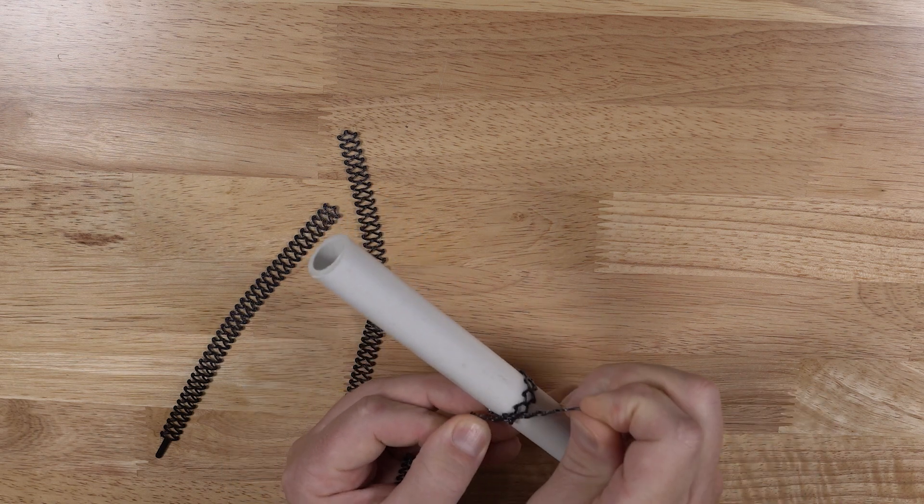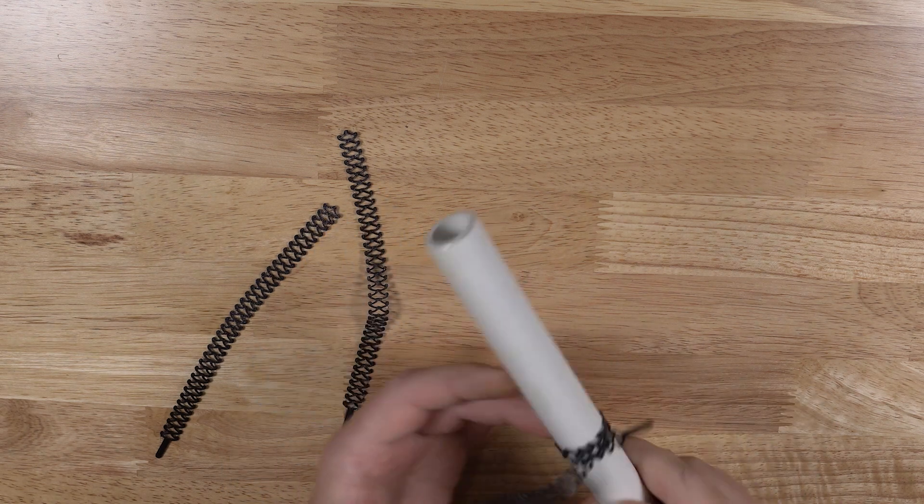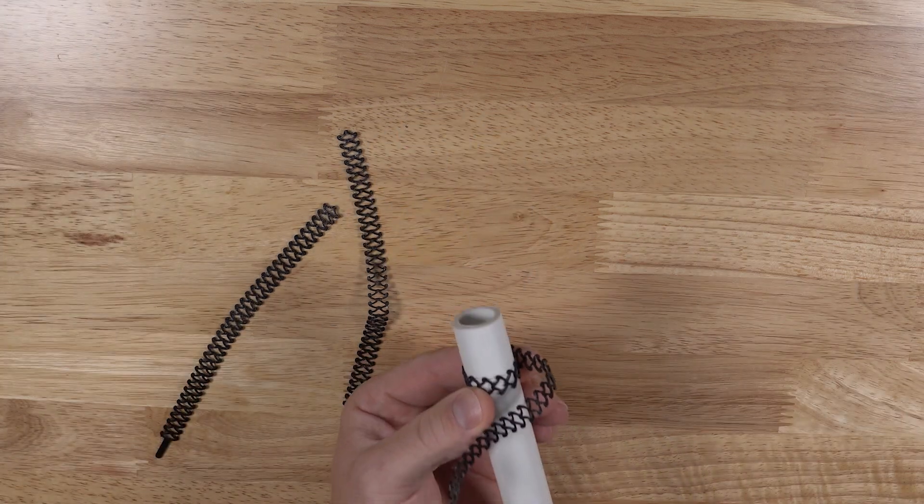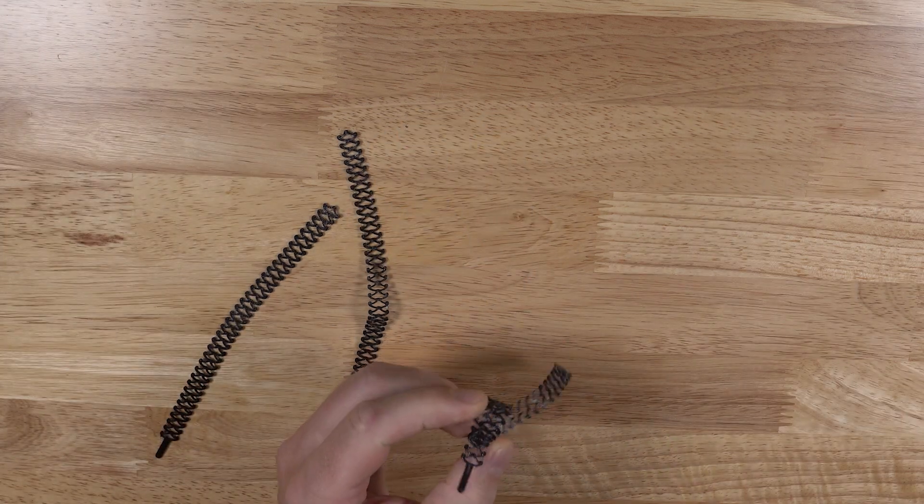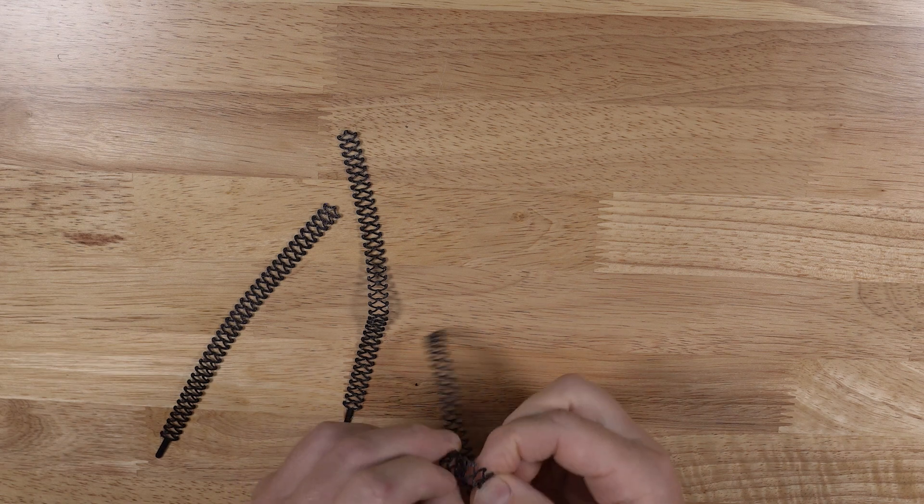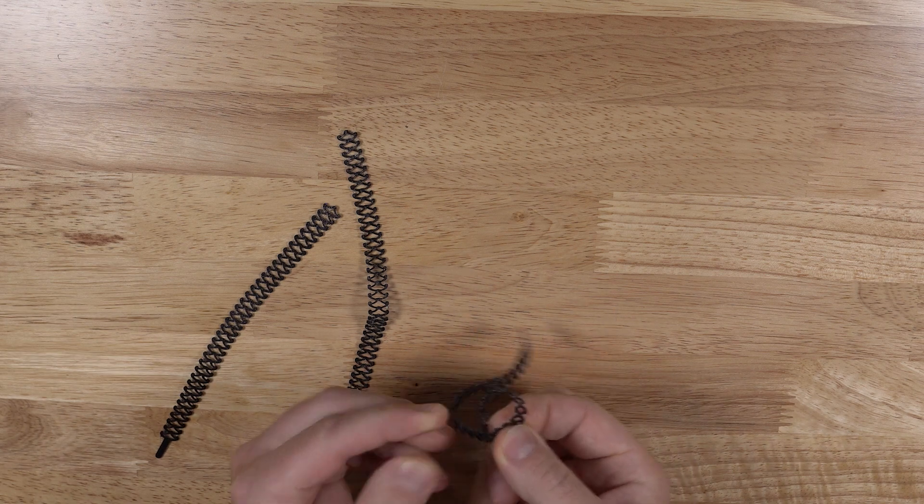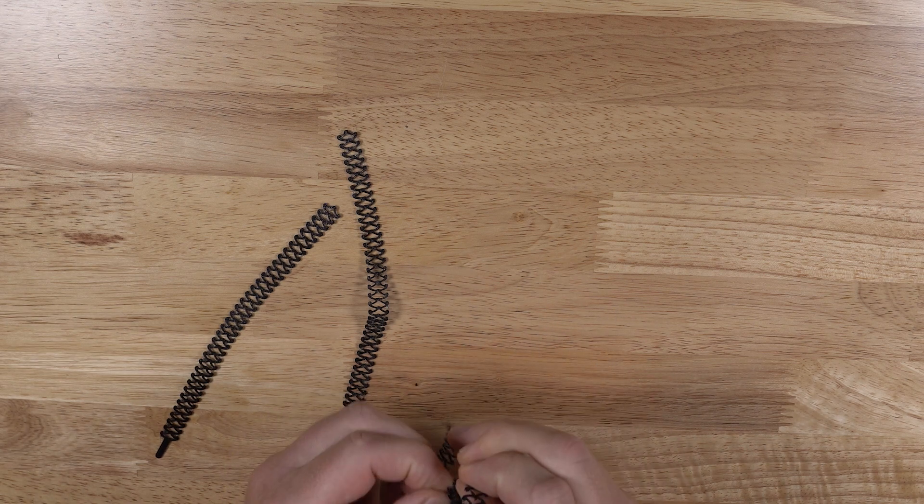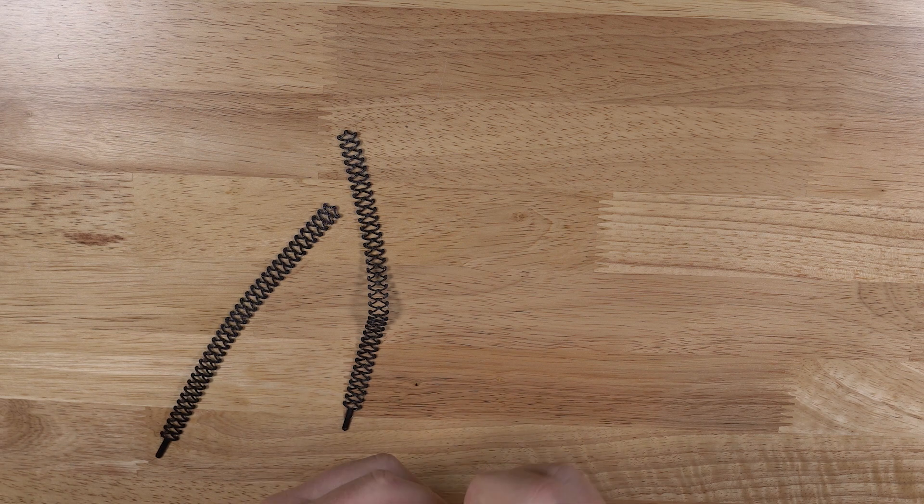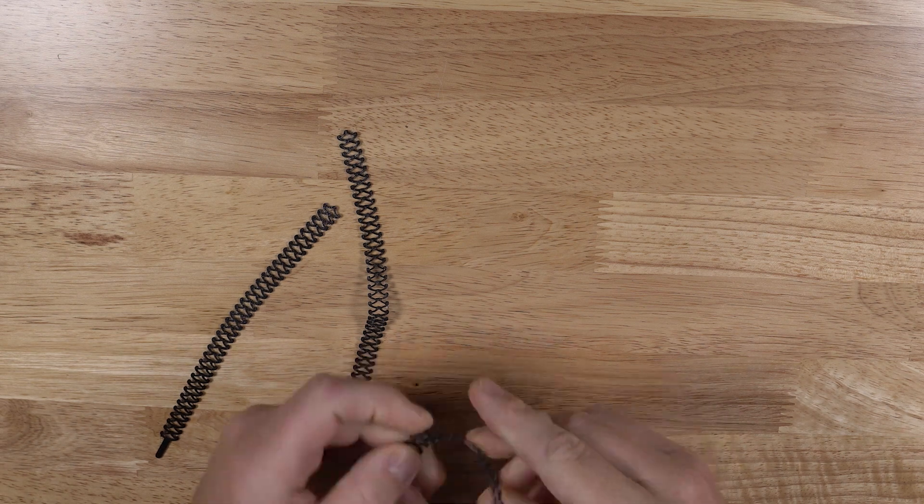And this is like a nice reusable zip tie almost. You can just put it around a bundle of wires like that. You can just pull it nice and tight. Nice in a pinch, especially if it's something where you're constantly taking zip ties on and off or you don't want to buy those funky little velcro straps.